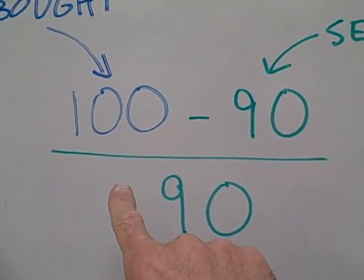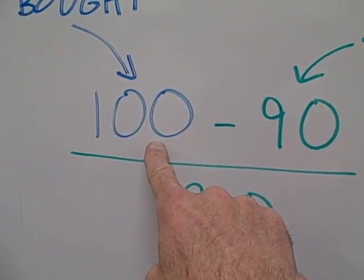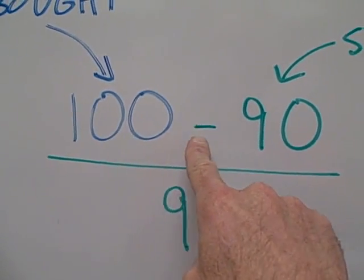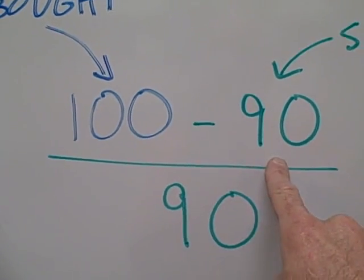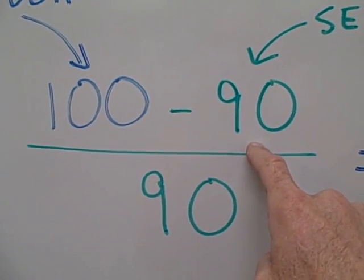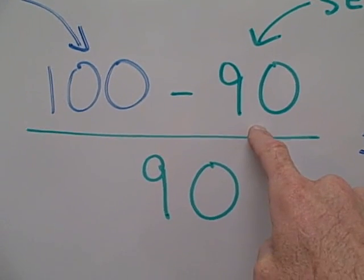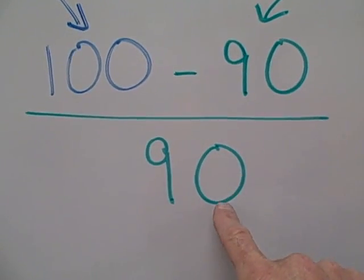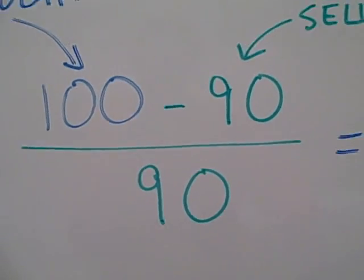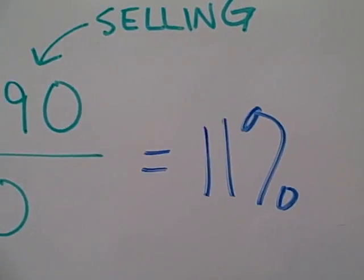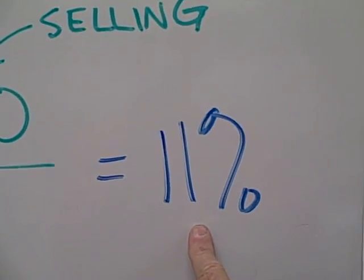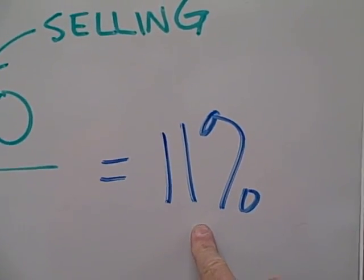So you take the amount that the bond was originally issued at minus the price that it is selling for now, and then you divide it by the price that it's selling for now, and you would find that you have a yield of 11 percent.